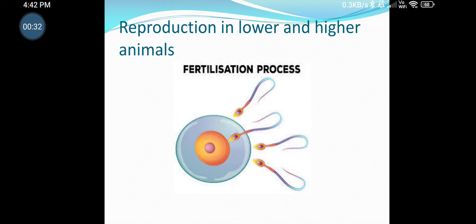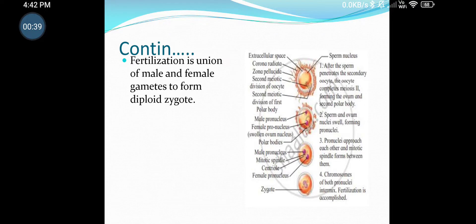As we have studied in the earlier standard, fertilization is nothing but the union of male and female gametes. It gives rise to a diploid zygote. When haploid male and female gametes unite, they give rise to a diploid zygote. Here you can see in the picture the process of fertilization.